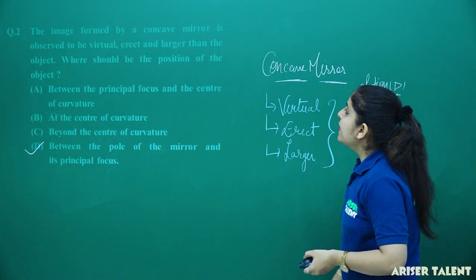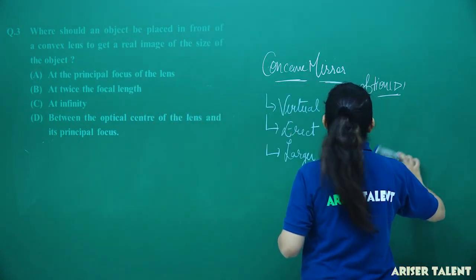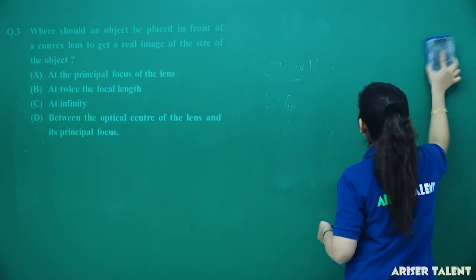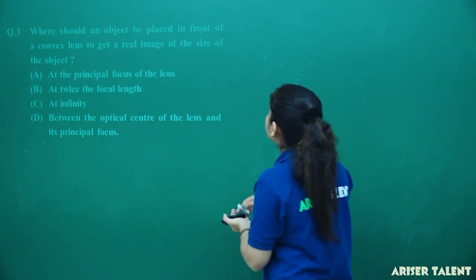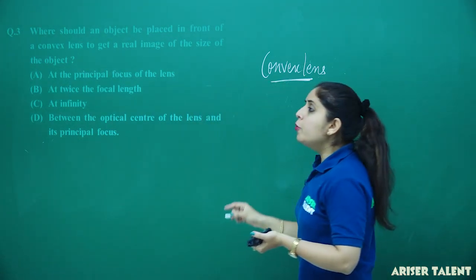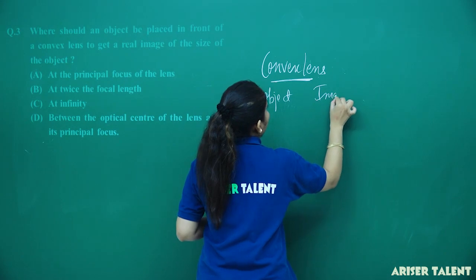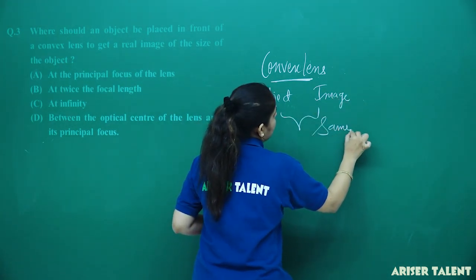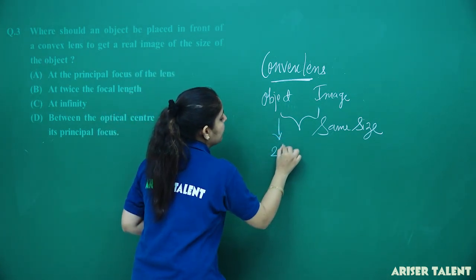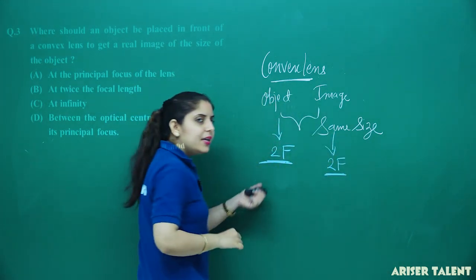Now let's see what the next question is saying. Where should the object be placed in front of a convex lens to get a real image of the same size as the object? We are given a convex lens and we have to obtain an image of the same size as the object. If you want the same size, you know that the object must be placed at 2F. If you place the object at 2F, you will get the image exactly at 2F.